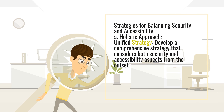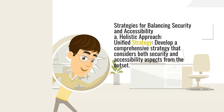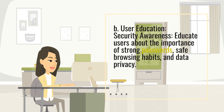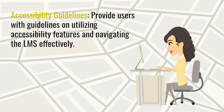Strategies for balancing security and accessibility. A. Holistic approach. Unified strategy: develop a comprehensive strategy that considers both security and accessibility aspects from the outset. Regular updates: continuously update and maintain the LMS to address security vulnerabilities and enhance accessibility features. B. User education. Security awareness: educate users about the importance of strong passwords, safe browsing habits, and data privacy. Accessibility guidelines: provide users with guidelines on utilizing accessibility features and navigating the LMS effectively.